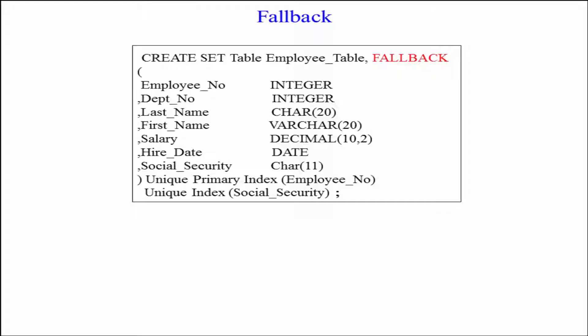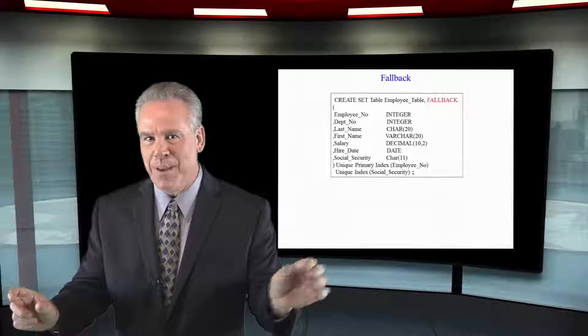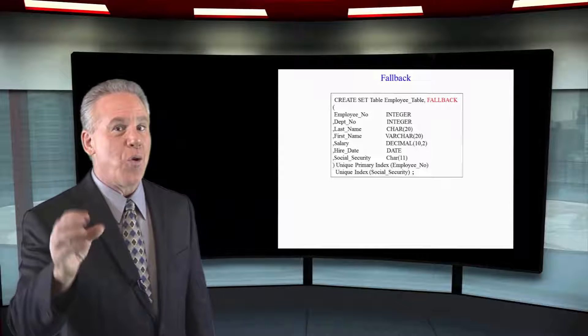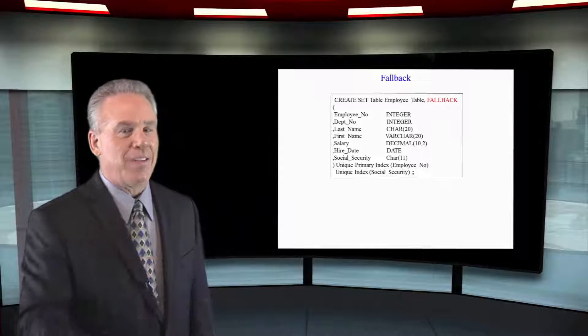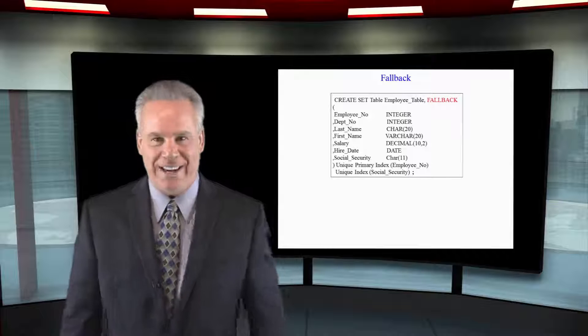That says, listen, when you lay the data out for this table, I want you to make a duplicate copy of each row, and I want you to put it on another amp in case it goes down. So you are doubling the data, but if an amp goes down, you are fully protected.